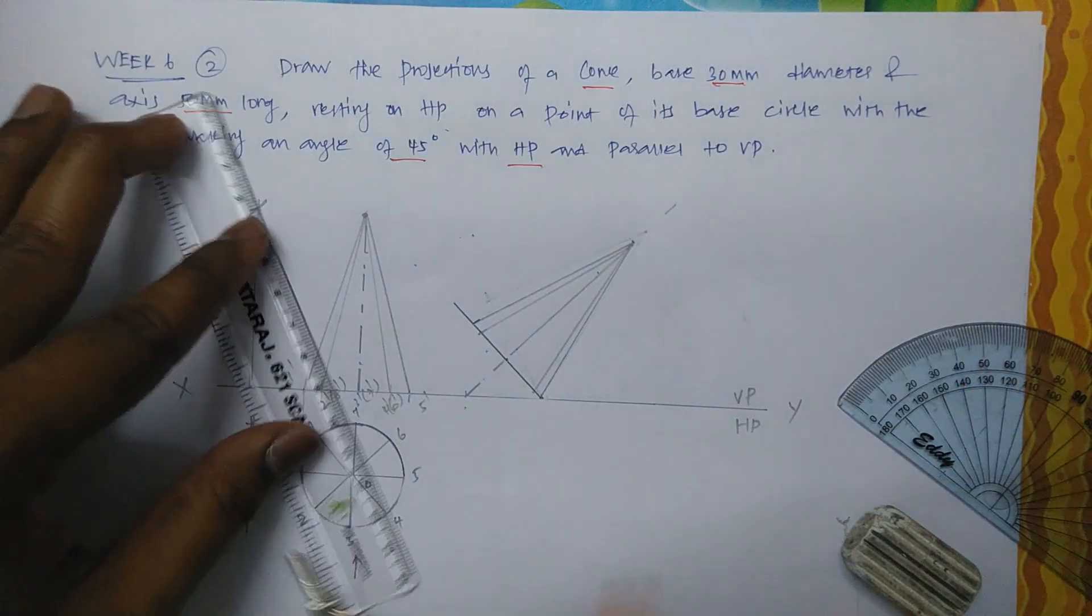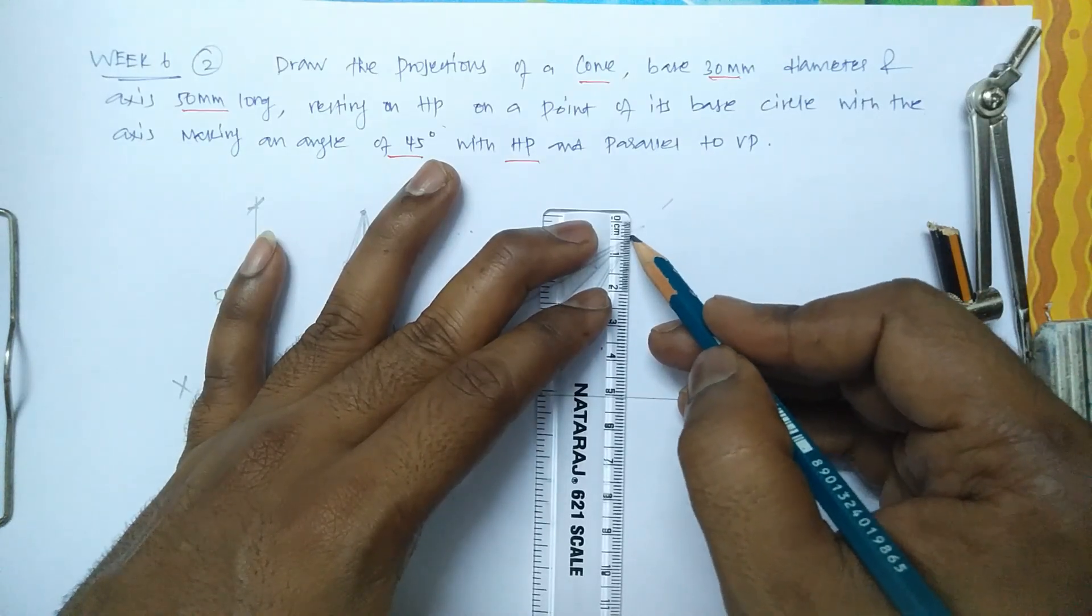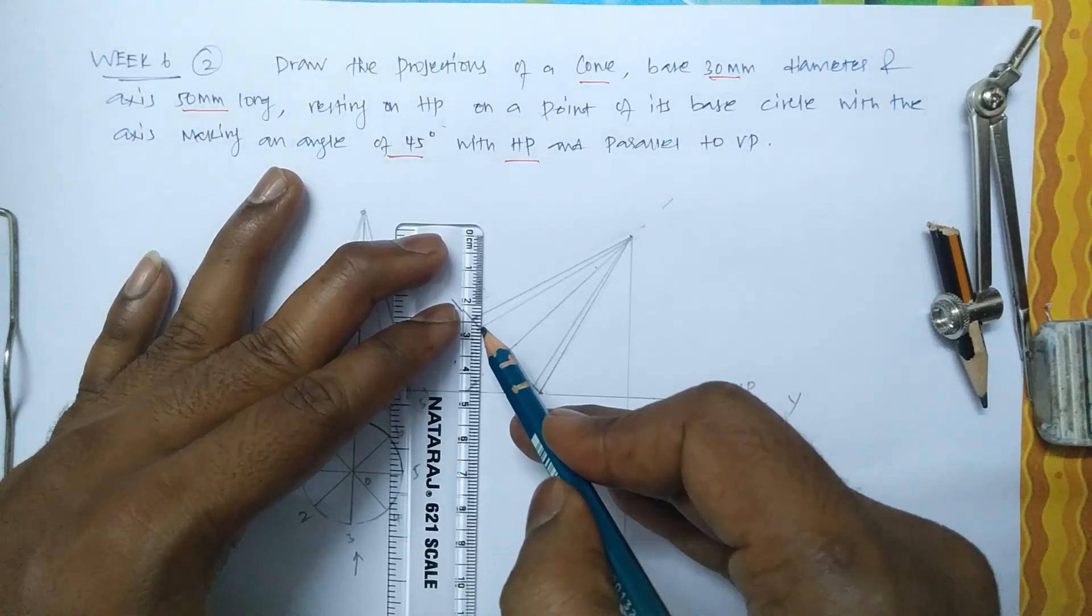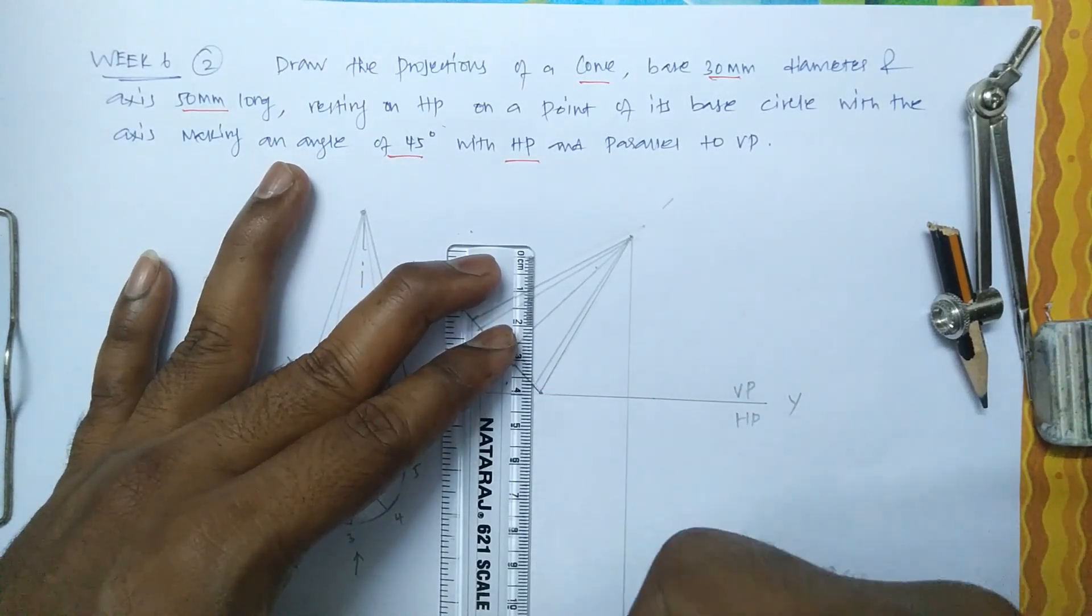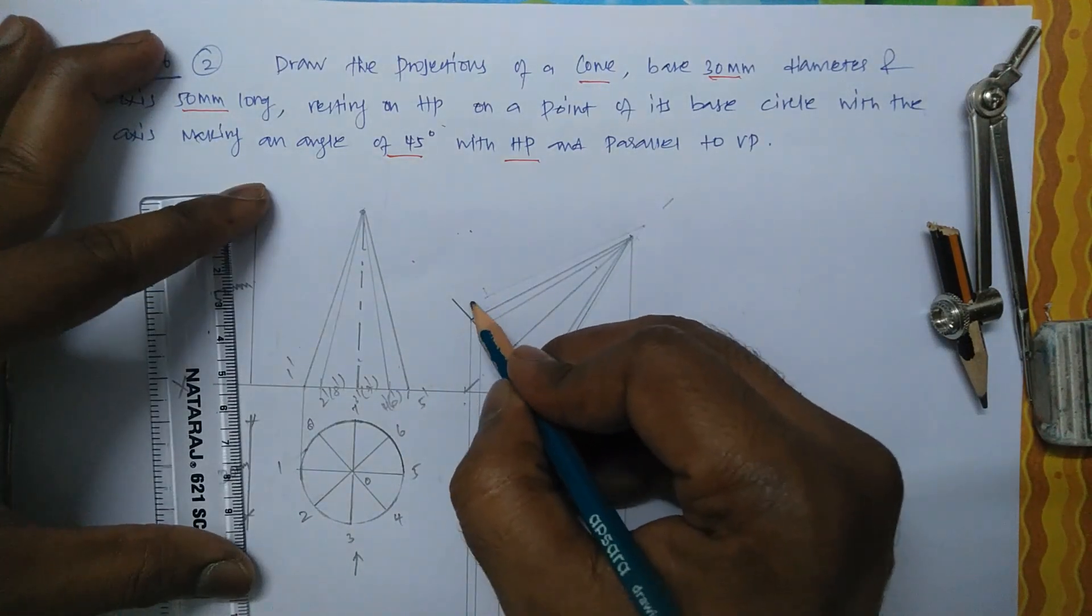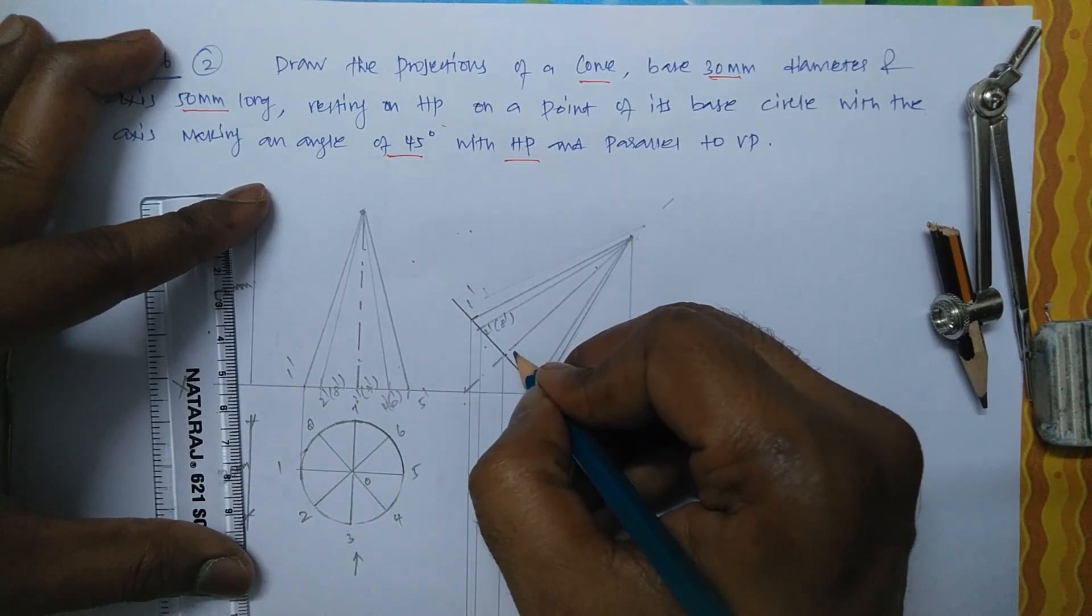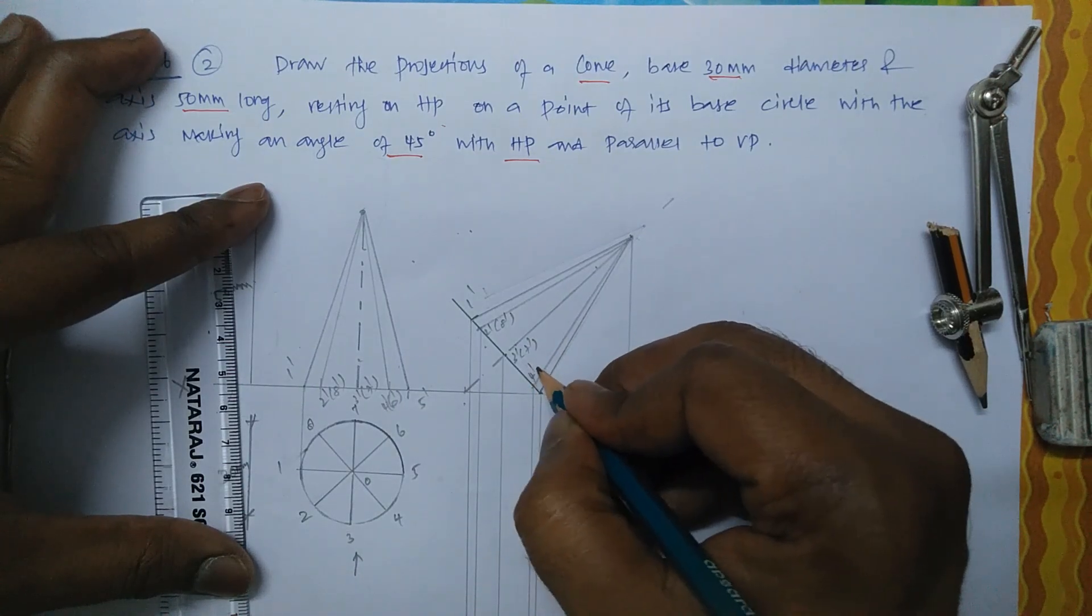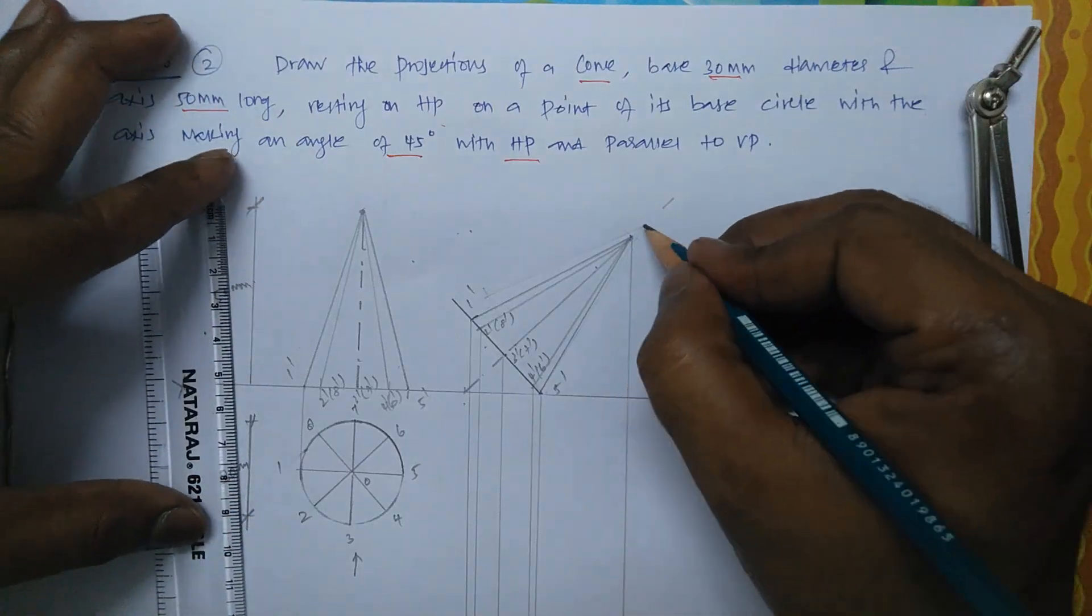Now erect a vertical line to the apex. This is the apex. Now these points are 1 dash, 2 dash, 8 dash, 3 dash, 7 dash, 4 dash, 6 dash, 5 dash. So this is the axis, let it be O dash.